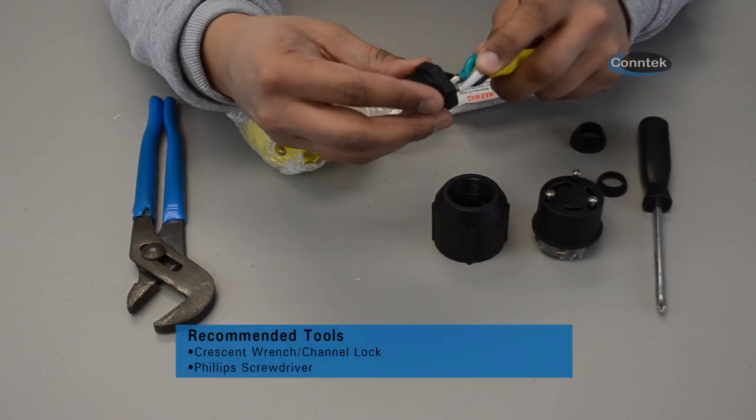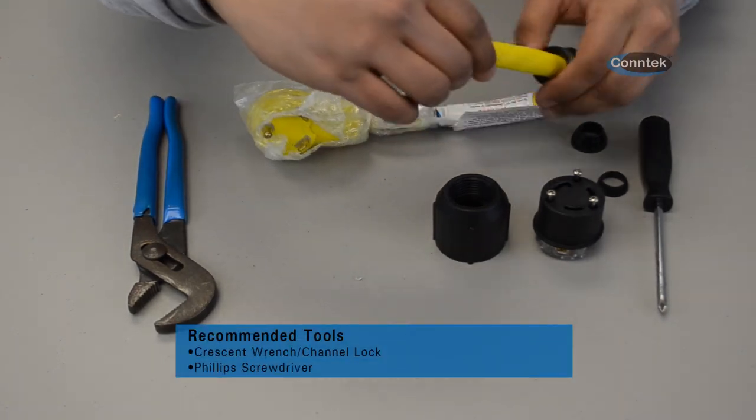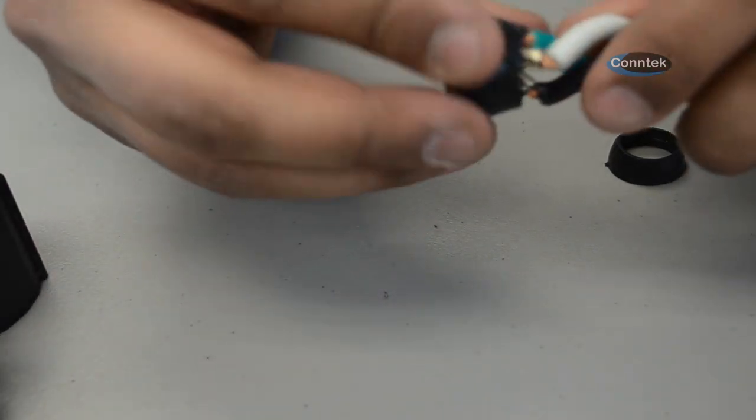Hello, this is Seth from Conteck Integrated Solutions. In this video I'm going to explain how to wire a locking three-prong 30 amp connector.